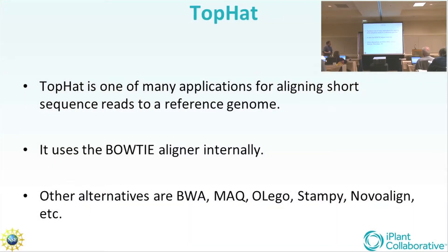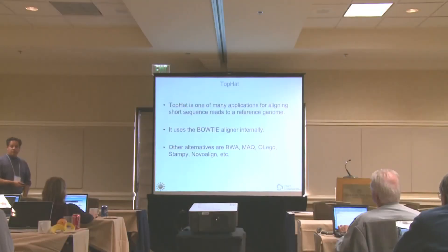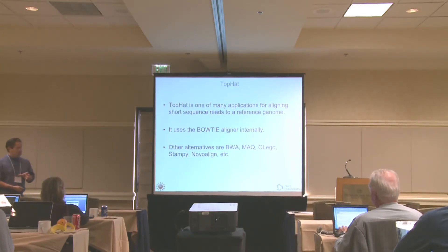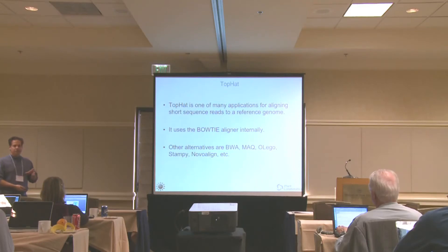This is one of many applications for aligning short sequence reads to the reference genome. Many of you have probably heard of the Burroughs-Wheeler aligner, which is an alternative that also aligns reads and emits BAM files. Each of them has their own merits and benefits, and we encourage computationally savvy people to incorporate those into the discovery environment. Everybody with an iClient account is empowered to integrate any application they want, except for things with graphical user interfaces.